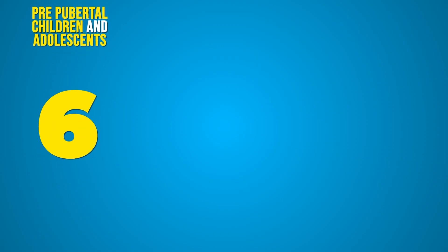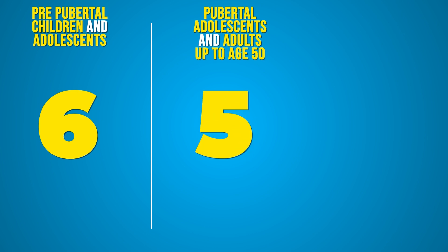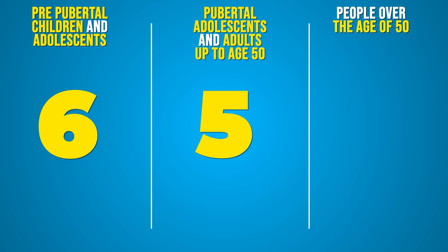The Beighton score is scored differently depending on the age of the person being evaluated. A score of six or more is required for generalized joint hypermobility in a child or prepubertal adolescent. A score of five or more is required for a postpubertal person up until age 50. And after age 50, a score of four or more is used to establish a diagnosis of generalized joint hypermobility.